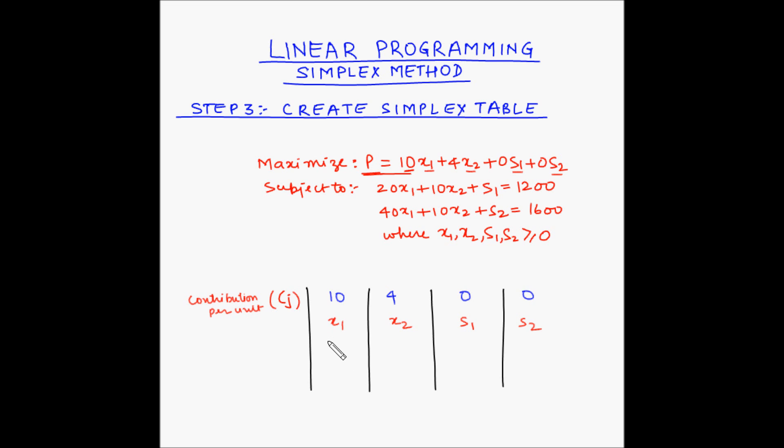Now below the second row of the table, the coefficients of the variables in the constraints are noted down. So these are the constraints, the coefficients of these constraints are to be noted down in the rows below the second row. Now our first constraint is 20x1 plus 10x2 plus s1 equals 1200. And our second constraint is 40x1 plus 10x2 plus s2 equals 1600.